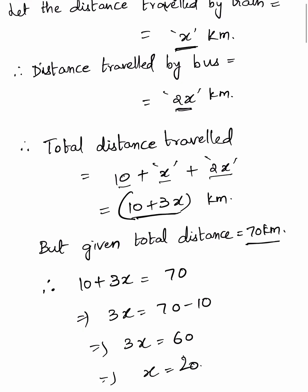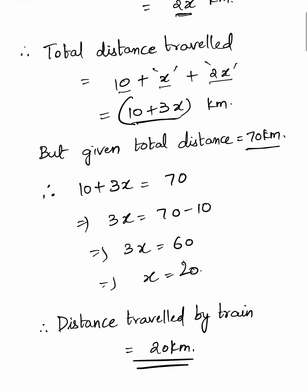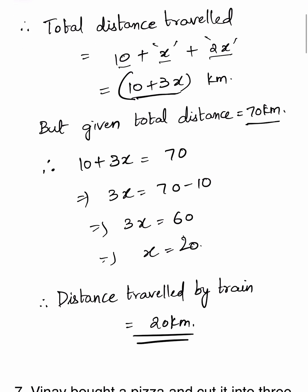10 plus 3x is equal to 70. Therefore, 3x equals 70 minus 10, that is 60. So x equals 60 divided by 3, which is 20. Therefore, the distance traveled by train is 20 km.